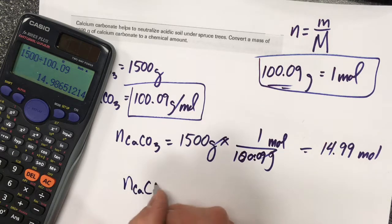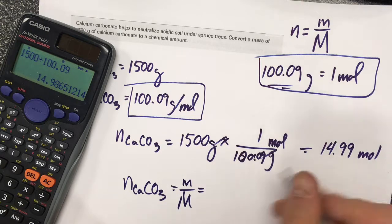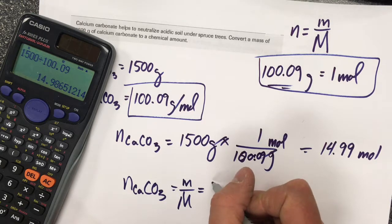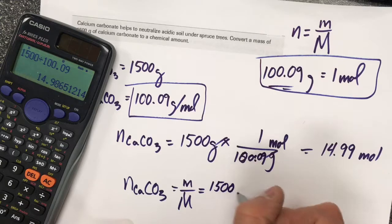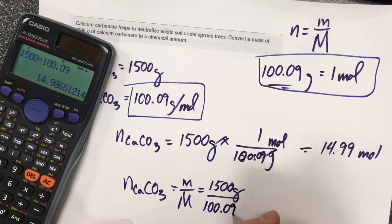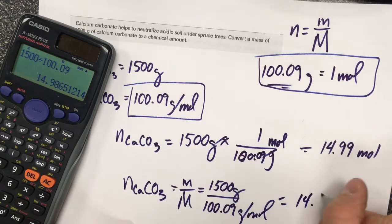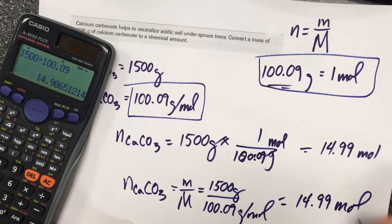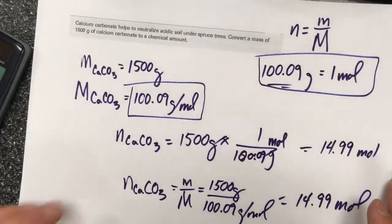The number of moles of calcium carbonate equals the mass of calcium carbonate divided by its molar mass - 1500 grams divided by the molar mass of calcium carbonate, giving you the same number, 14.99 moles. Either method is acceptable in my class.